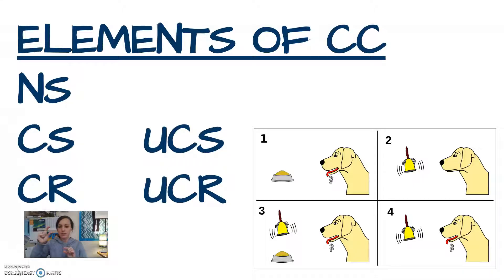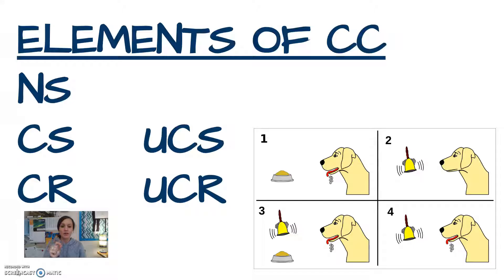That's what Pavlov found out, and we call it classical conditioning. You need to be able to identify the elements: NS, CS, CR, US (or UCS), and UCR. If you already know what those are, feel free to pause and try to identify those different parts of Pavlov's experiment. I'm going to go through and explain them.